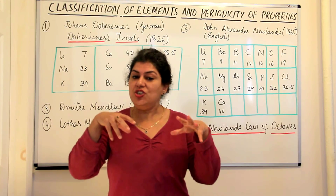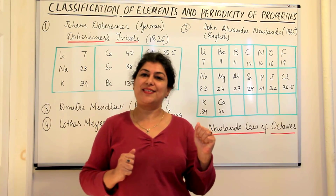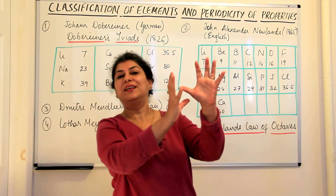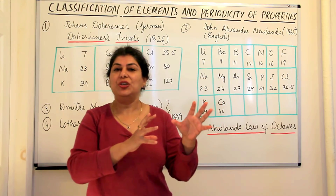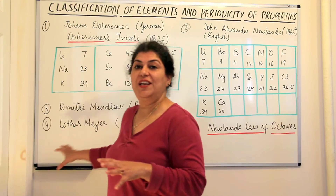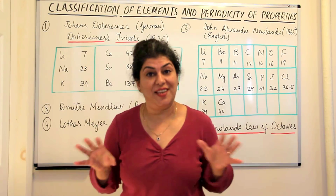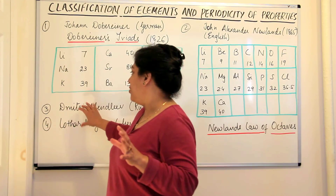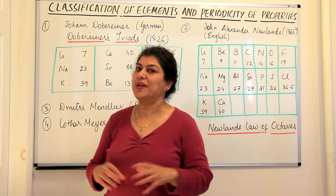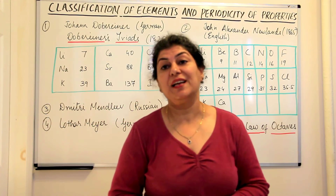Mendeleev also talked about the periodicity in properties, and he classified the then-known elements in a periodic table. His work was very much in detail and it was a very forward-looking periodic table. Therefore, even today, if you were to select just one chemist in the entire history of chemistry and give him the highest credit, you would give it to Mendeleev — the genius that chemistry has never seen. These were the two scientists who gave their periodic classification.